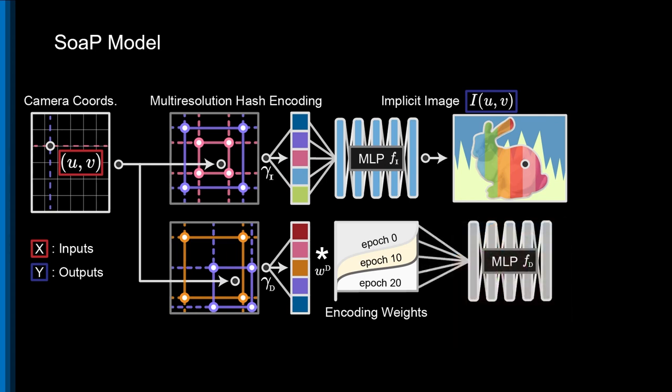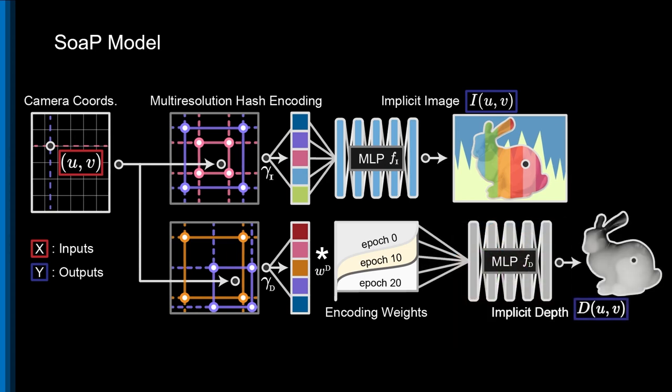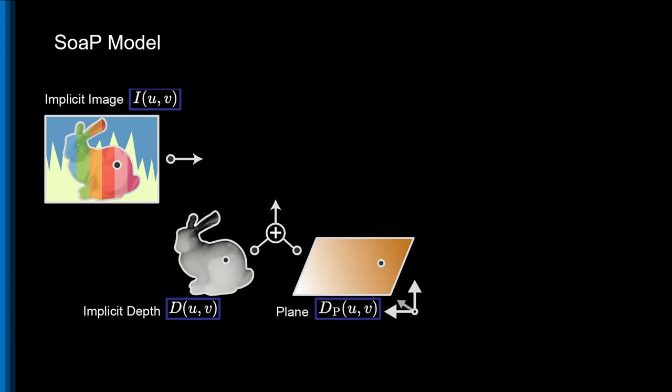This vector is passed into a second MLP, which implicitly represents a single-channel depth map. To this depth map, we add a background plane, the plane that gives shakes-on-a-plane its name.